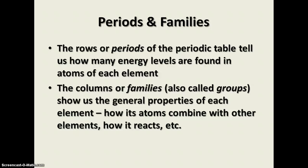The columns or the families show us the general properties of each element. In other words, how its atoms combine with other elements, how it reacts with other elements and so forth. These are things that repeat down that column as far as the way they combine with other elements. It's very easy to tell what's going to combine with what based on where they're located in the periodic table.